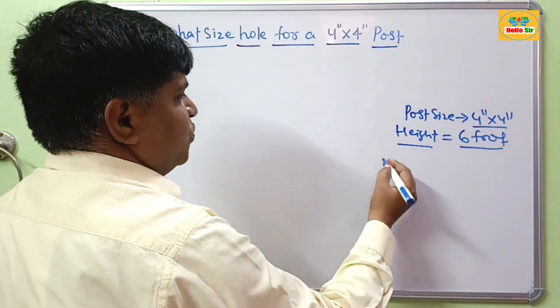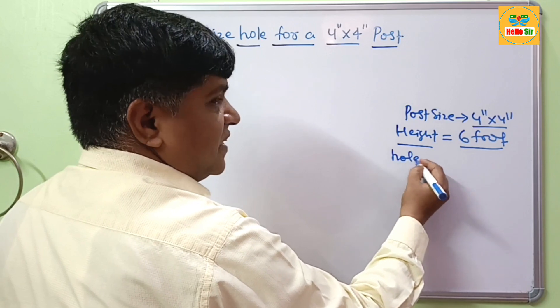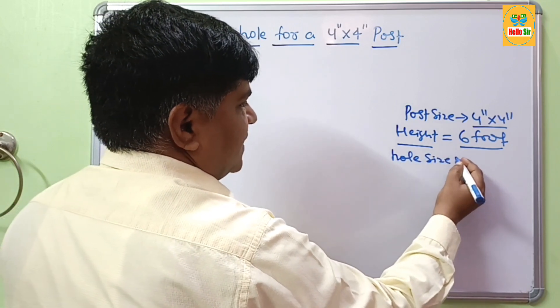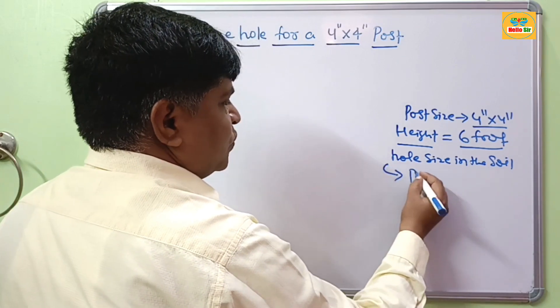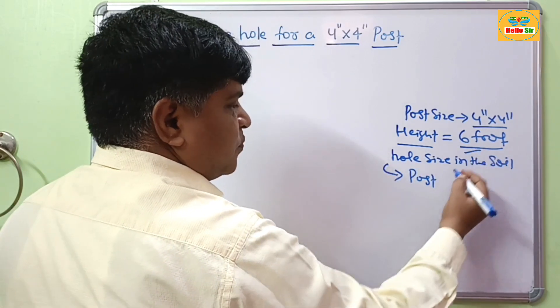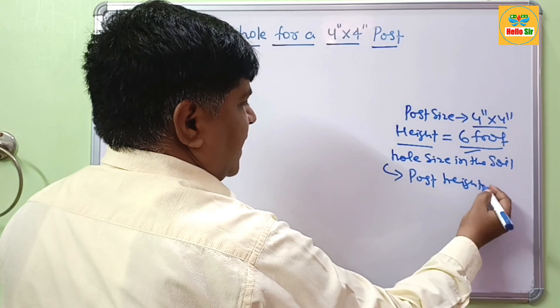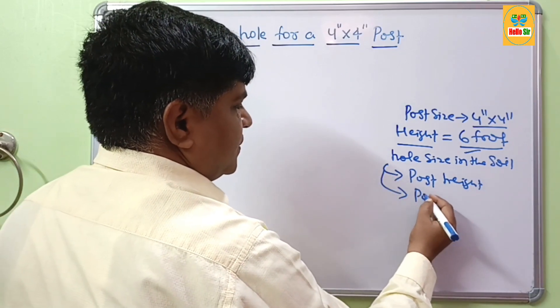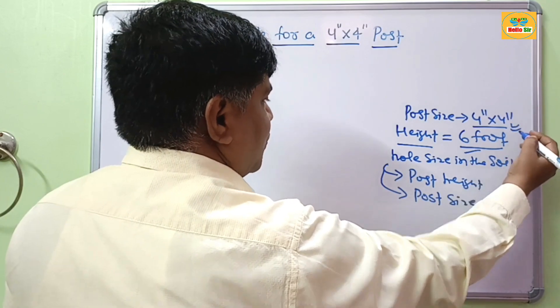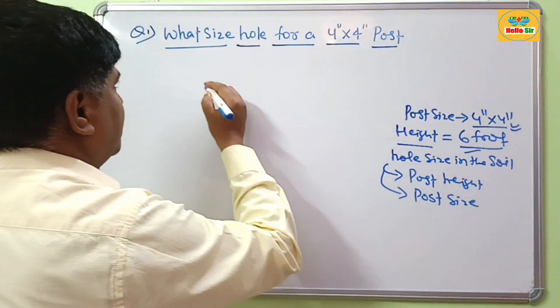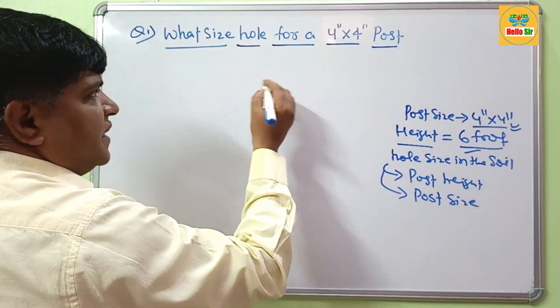And your question is what size hole. And the hole size in the soil will depend on the post height that is 6 foot and the post size that is 4 inches by 4 inches. It means how the depth you can be built in the soil.